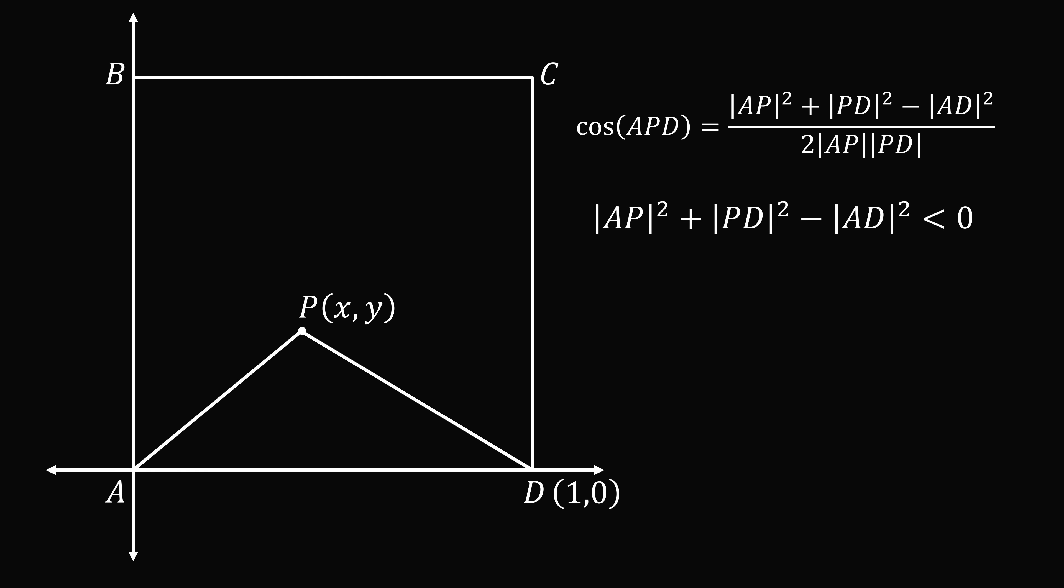So, we want to see whether AP² plus PD² minus AD² is less than 0. That will be the condition for an obtuse angle. We can now calculate this using the distance formula. We have x² + y² plus the square of (1-x) + y² minus 1 is less than 0. We can expand the binomial and collect like terms. So we have 2x² - 2x + 2y² is less than 0. We divide through by 2. So we have x² - x + y² is less than 0.